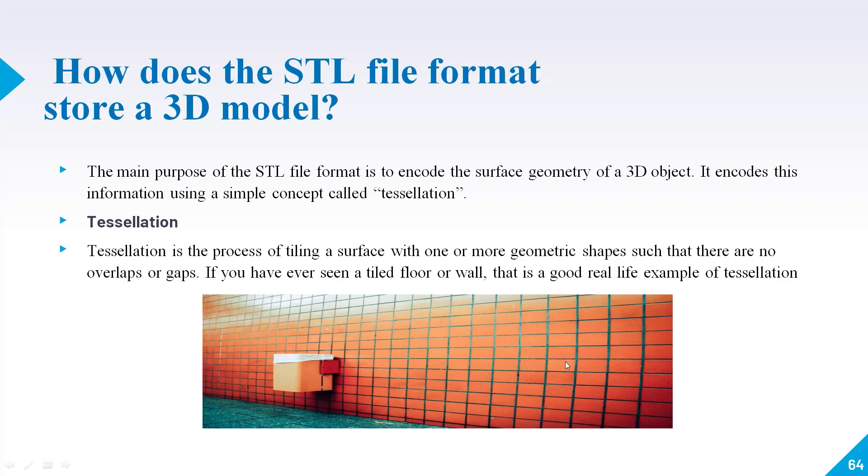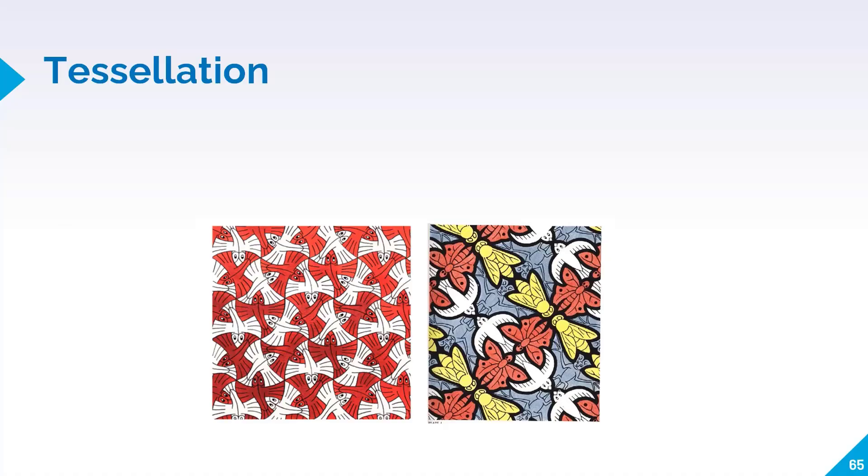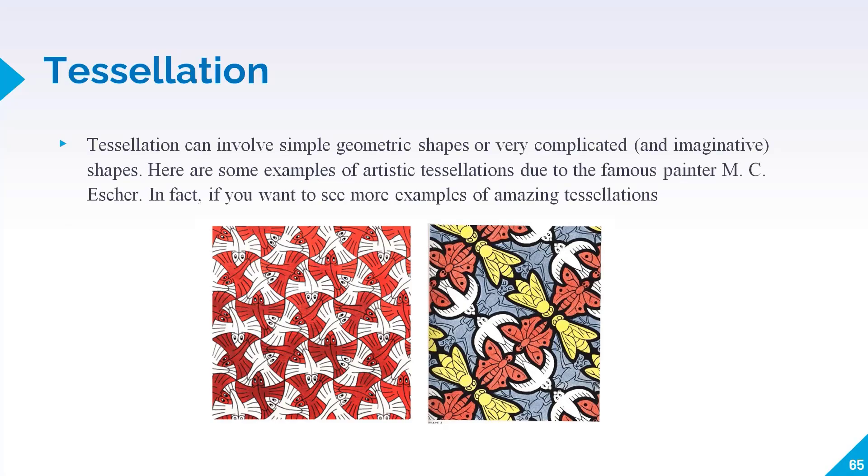Here in this image you can see the tiles are arranged in a proper way in all three directions without overlapping them. When your 3D CAD model is converted into STL format, then your model will be distributed in the tessellation way. Tessellation can involve simple geometric shapes or very complicated shapes.